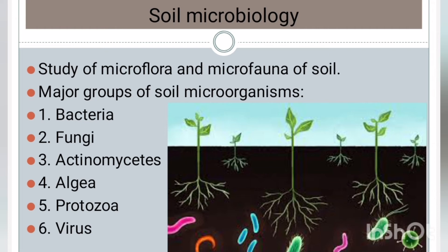Basically, the soil organisms are classified as autotrophs and heterotrophs. Autotrophs utilize organic matter and are the main producers. They are classified as photo-autotrophs and chemo-autotrophs. Heterotrophs are the consumers and decomposers, and are of two types: photo-heterotrophs and chemo-heterotrophs.